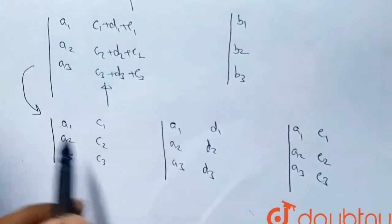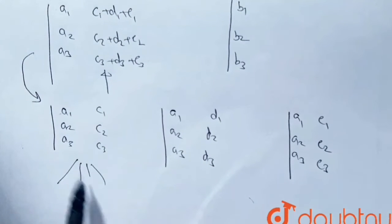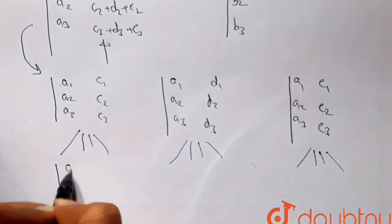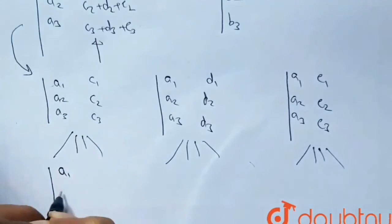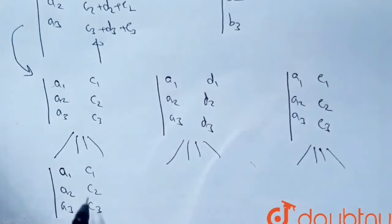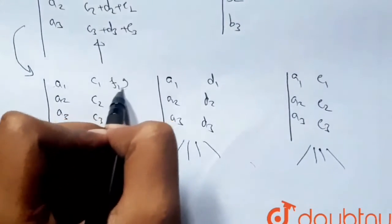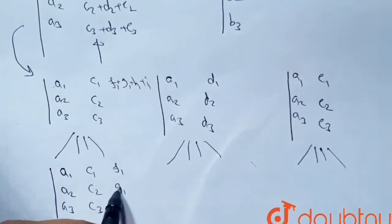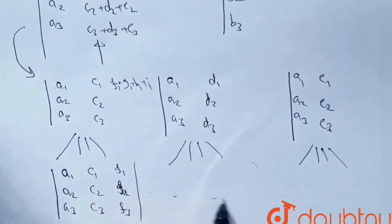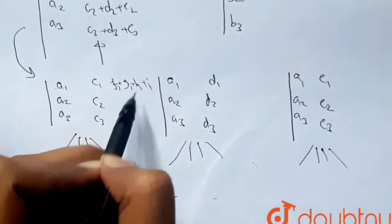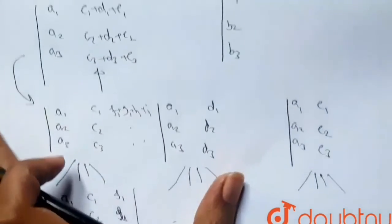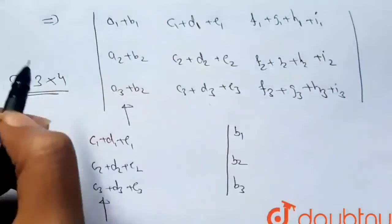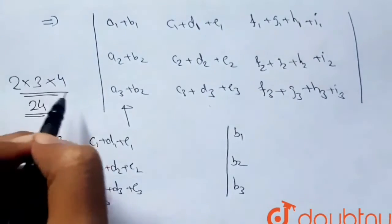Similarly, each of these six determinants can be divided using the third column, which has four terms: f1 plus g1 plus h1 plus i1. Each can be split into four determinants with third columns f1, f2, f3 then g1, g2, g3 then h1, h2, h3 and finally i1, i2, i3. So the total number of determinants is 2 times 3 times 4, which equals 24. That is our answer, option D: n equals 24.